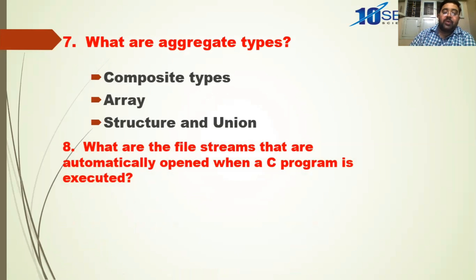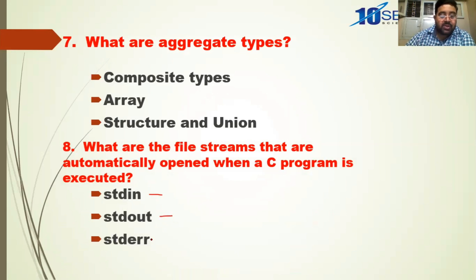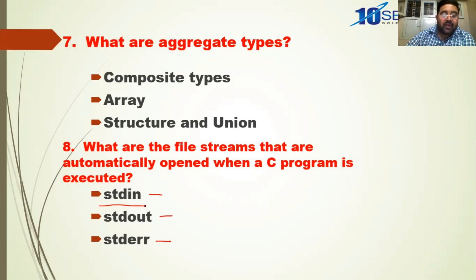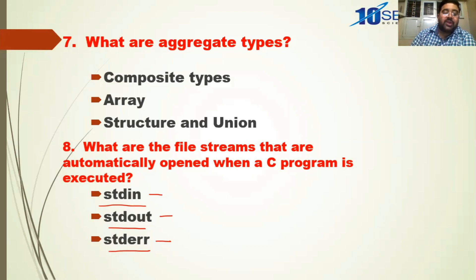What are the file streams that are automatically opened when a C program is executed? There are three standard file streams: stdin, stdout, and stderr. stdin means standard input, stdout means standard output, and stderr means standard error. The operating system considers each and every device as a file. Standard input is the keyboard, standard output is the monitor, and standard error can be a printer or monitor where we display or print errors.